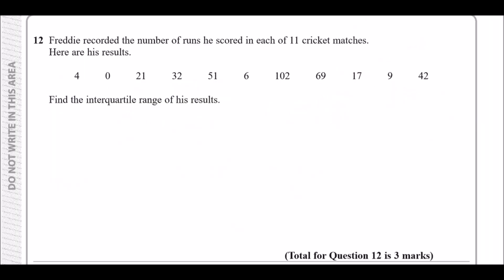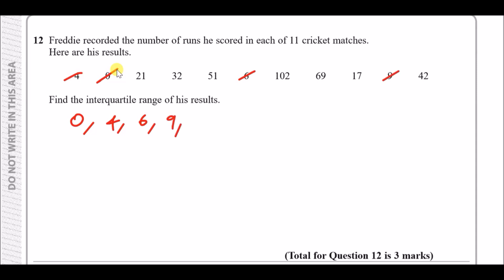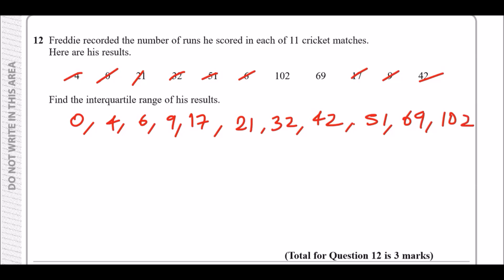Number 12: Freddy recorded runs scored in 11 cricket matches. Find the interquartile range. Whenever you have an unordered list of data, always rewrite it in numerical order from smallest to largest first. Starting from the smallest: 0, 4, 6... continue across all 11 values.